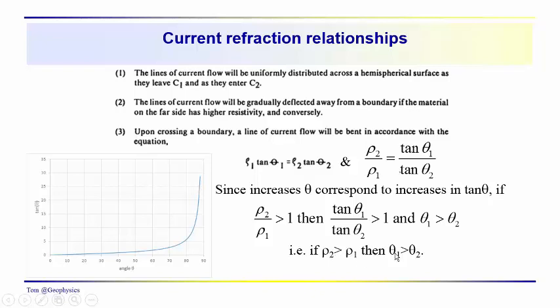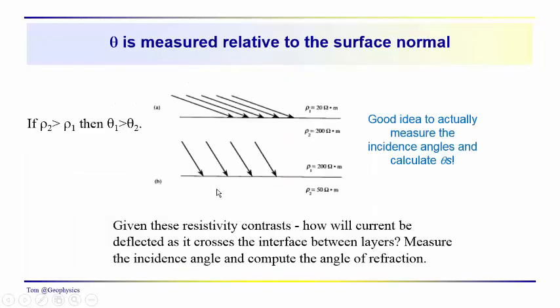If ρ2 is greater than ρ1, θ1 will be greater than θ2. You can think of it as an inverse relationship: increase ρ2, decrease θ2. Here's a problem. θ is measured relative to the surface normal when we're talking about θ. So θ1 in this case is the angle that the current flow line makes with the normal. Notice that ρ2 is the higher resistivity interval, ρ1 is the lower resistivity interval. Since ρ2 is greater than ρ1, we know that θ1 must be greater than θ2.